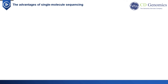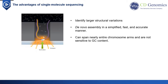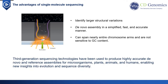Although next-generation sequencing has enabled population-scale analyses of small variants, it is difficult to identify larger structural variations. Furthermore, de novo assemblies using next-generation sequencing are often of lower quality compared with those using older and more expensive methods. Single-molecule sequencing technologies can overcome these difficulties — they span nearly entire chromosome arms and are not sensitive to GC content. They have been used to produce highly accurate de novo and reference assemblies for microorganisms, plants, animals, and humans, enabling new insights into evolution and sequence diversity.